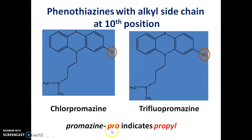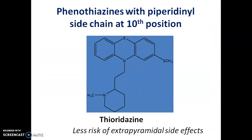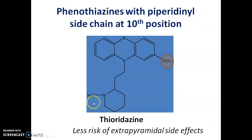The nature of the side chain at the tenth position also plays an important role. We have different side chains at position 10: it can be an alkyl side chain, a piperidine side chain, or a piperazine side chain. Depending on the nature of the side chain at the tenth position, we have different classes of drugs. If phenothiazines contain an alkyl side chain at the tenth position, examples are chlorpromazine and trifluopromazine — they contain an alkyl side chain of three carbons. 'Pro' in promazine indicates the propyl side chain. If a piperidine side chain is present at the tenth position, the example is thioridazine, which contains a piperidine ring and has less risk of extrapyramidal side effects.